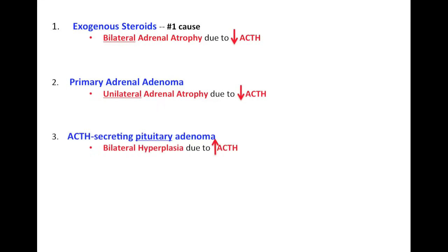The next cause is an ACTH-secreting pituitary adenoma. In this case, the problem is the pituitary itself — it's secreting too much ACTH. Too much ACTH will stimulate both adrenal glands, causing bilateral hyperplasia. They will also secrete a lot of cortisol, but there won't be effective negative feedback because the pituitary adenoma doesn't respond to it and continues to secrete a lot of ACTH.